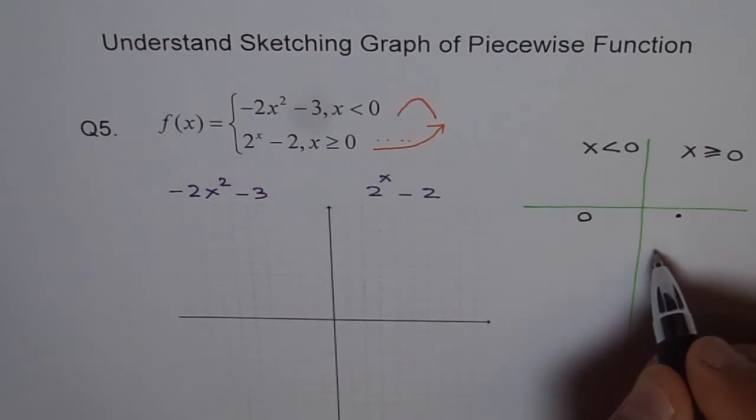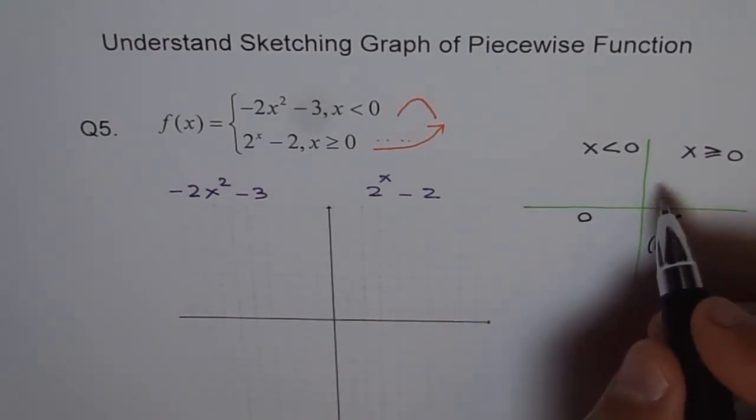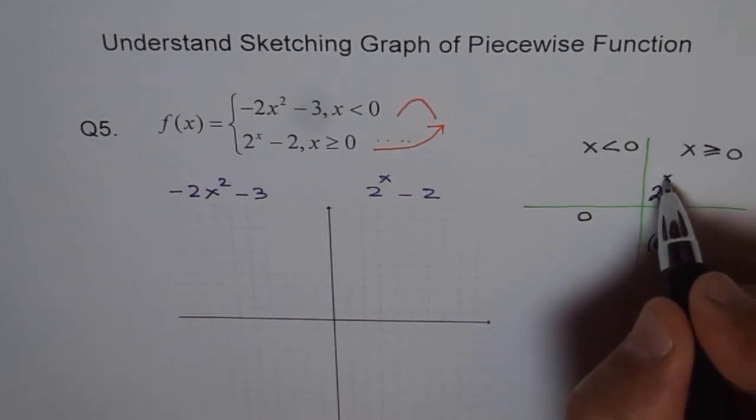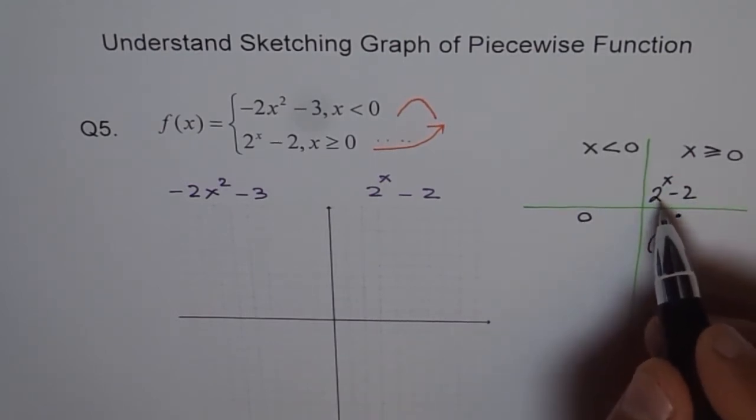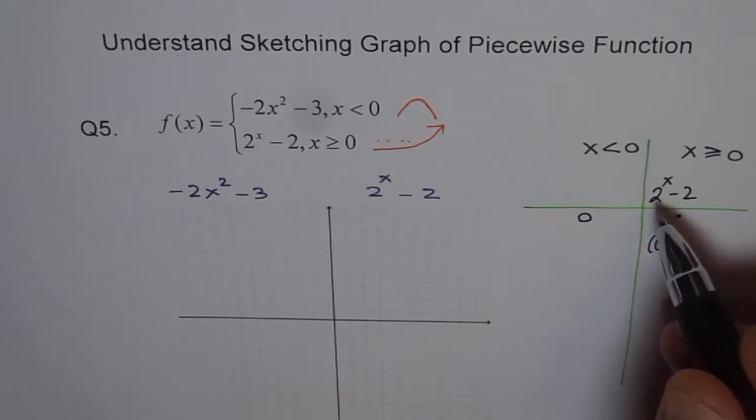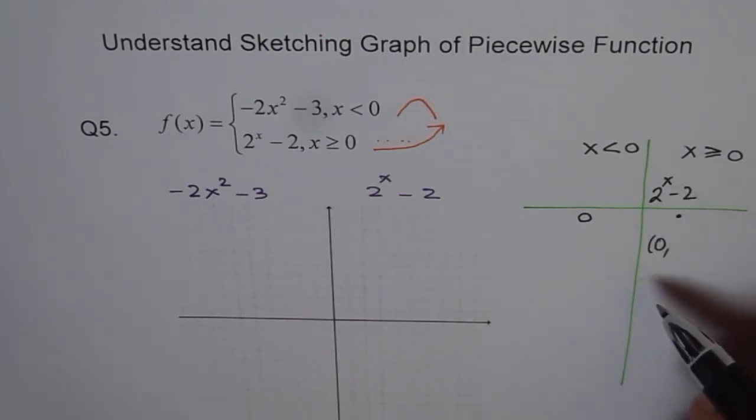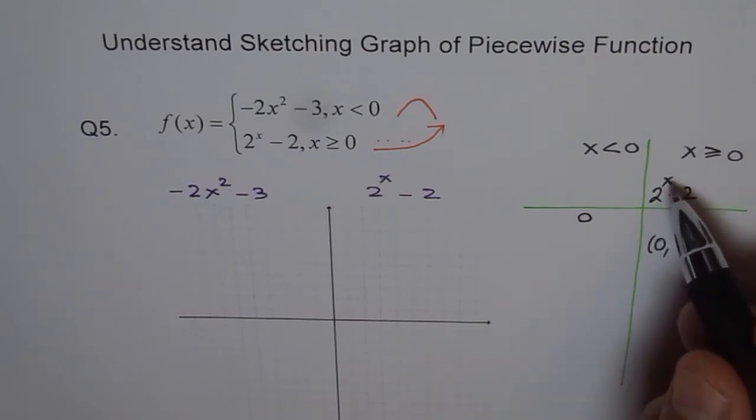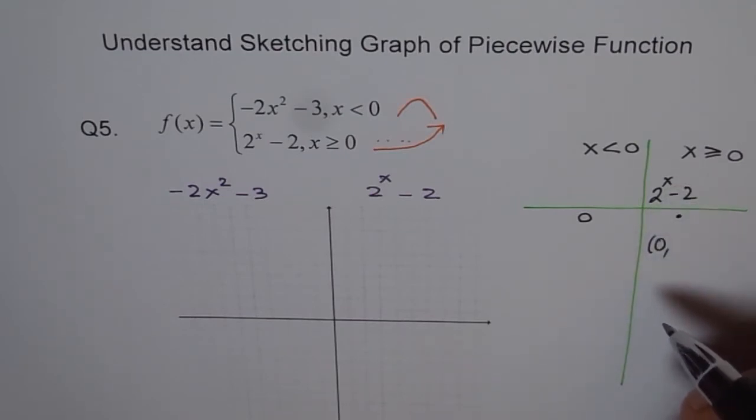So 0 is included here. So we will say, well, this is filled in hole. And at 0, the value should be, let me write this function itself here. 2^(x-2). So when I plug in 0 here, anything to the power of 0 is 1. Many times I have seen students making this mistake. They write 2^0 as 0 or something, but not 1. 2^0, for that matter, anything to the power of 0 is 1 except 0.